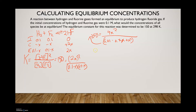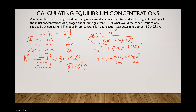Multiplying across gives us 4x² equal to 1.5 minus 30x plus 150x². The quadratic equation requires ax² + bx + c form. So we subtract 4x² from both sides, giving us 0 equal to 1.5 minus 30x plus 146x². Here, 146 is your a coefficient, -30 is your b coefficient, and 1.5 is your c. We're going to put that into the quadratic equation.